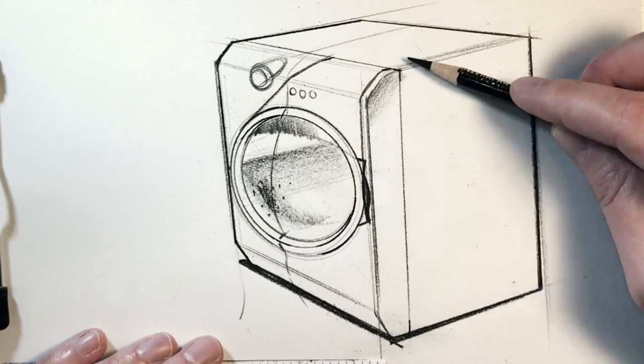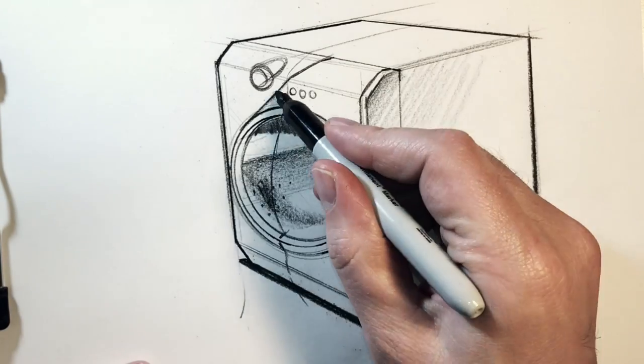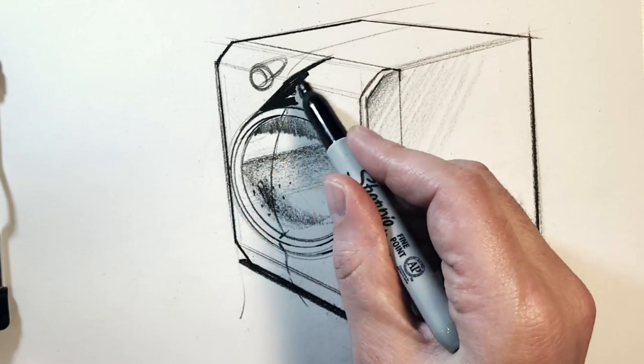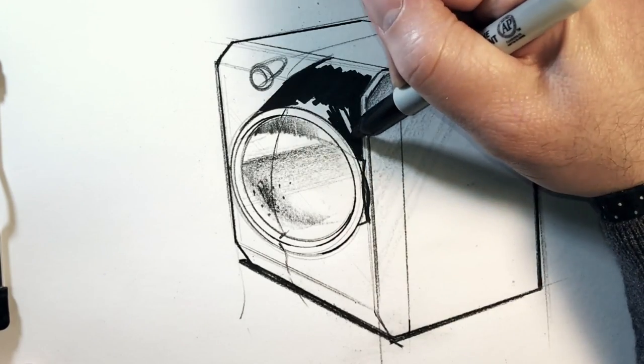Let's start to define the right side of the dryer just to give the faces a little bit of separation. Now we can start to have some fun, so I'm gonna black in that whole display area that comes off of the door.